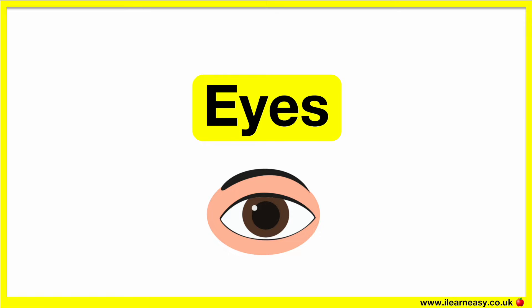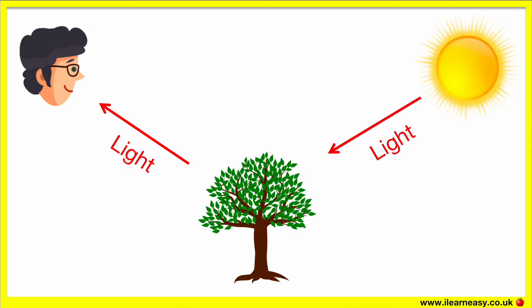Our eyes help us to see things. The human eye is like a digital camera. There are different parts of the eye that carry out different functions. When we look at objects, the light that reflects off the object enters the eye.